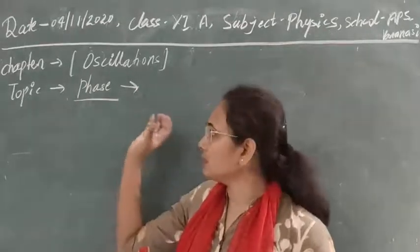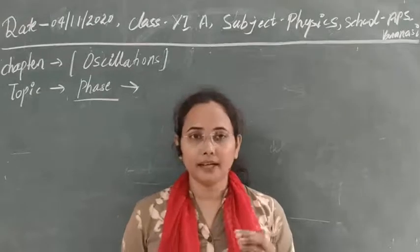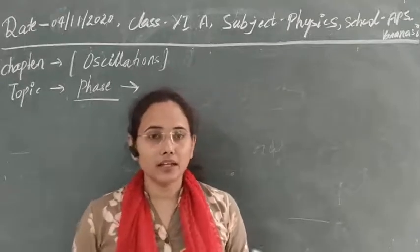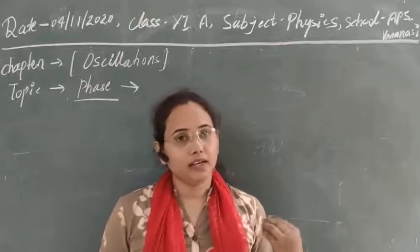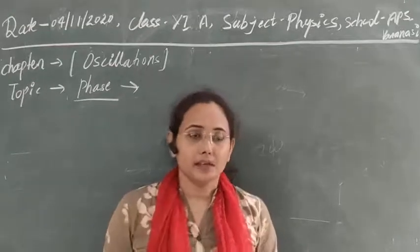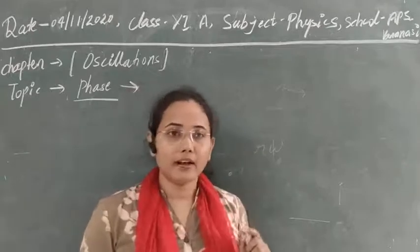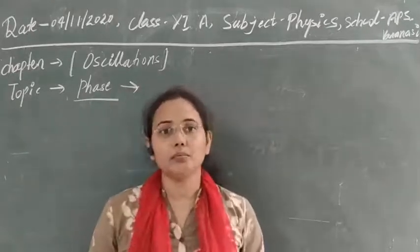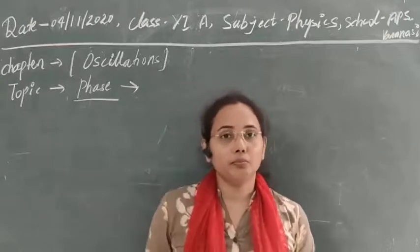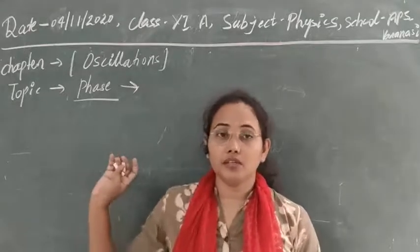Phase is a physical quantity which describes the motion and direction of a particle at any instant in the motion. Suppose we want to calculate in which direction our particle is oscillating and also what is its position at that point. If we have knowledge about the direction then we can also calculate the position of the particle. So phase tells us the position and direction of the particle at any instant in the motion.